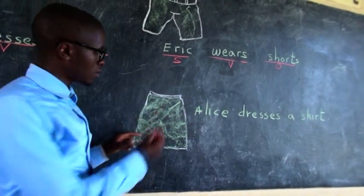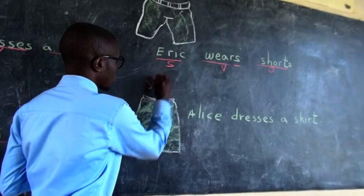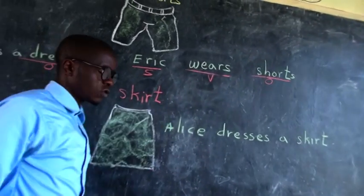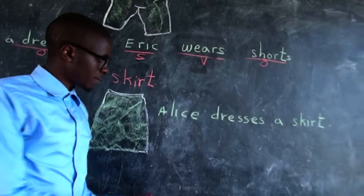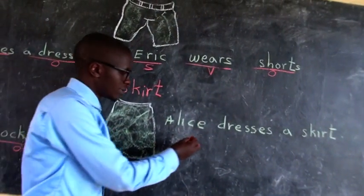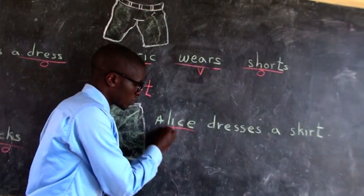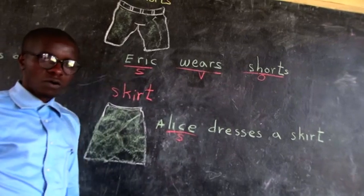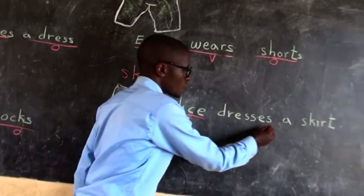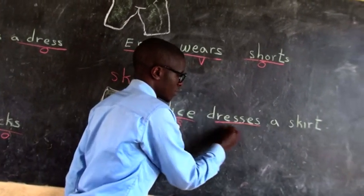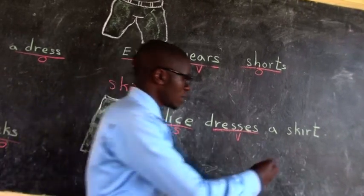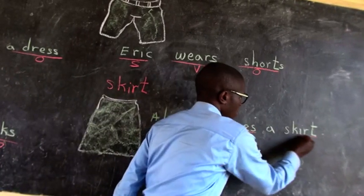A skirt. To make a sentence, you can say: Arisa dresses a skirt. What Arisa does is to dress. What does Arisa dress? A skirt.